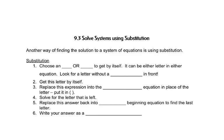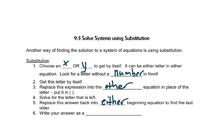In this segment we will look at another way of solving systems of equations — this time we use substitution. The idea is that we will choose either an x or a y to get by itself; it can be either letter in either equation. We want to look for a letter that does not have a number in front of it. We get that letter by itself, replace that expression into the other equation in parenthesis, solve for the letter that is left, then replace back into either beginning equation to find the last letter. We always write our answers as a point x comma y.